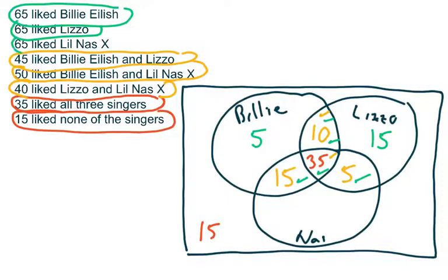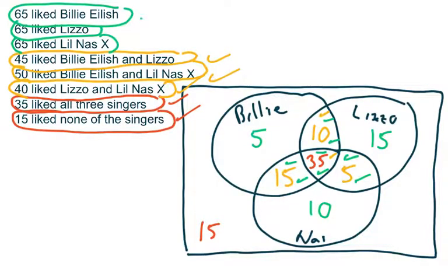Finally, same token: 65 people like Lil Nas X. How many do we have accounted for so far? 15 plus 35 is 50, plus 5 is 55. We've accounted for 55 people who like Lil Nas X who also like other singers. That means there are 10 more who like Lil Nas X but don't care for the others. If you follow that pattern — all three sets first, then two sets, then one set — every region of the Venn diagram should have a number written in it.